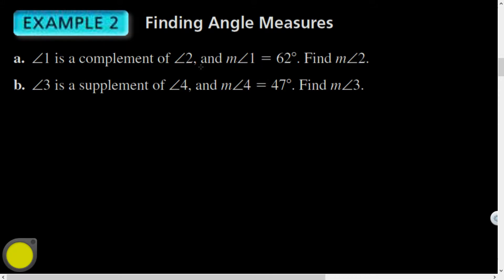Let's see, for A, it says angle 1 is a complement of angle 2. And the measure of angle 1 is 92 degrees. So I could say for part A that measure of angle 1 plus measure of angle 2 equals 90 degrees. That is true by def of comp. And then using substitution, I could then plug this in for the measure of angle 1.